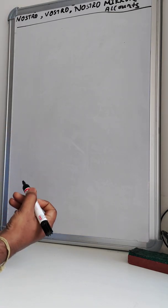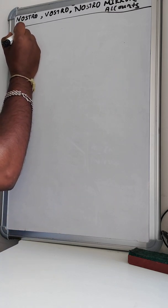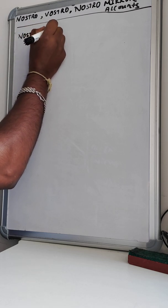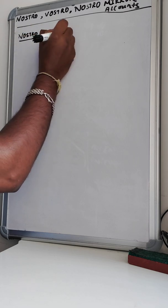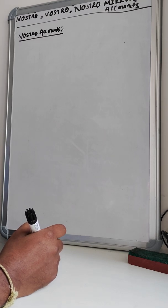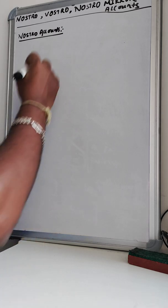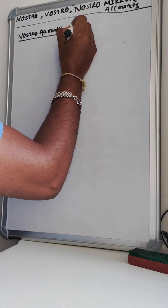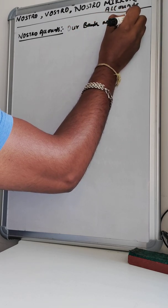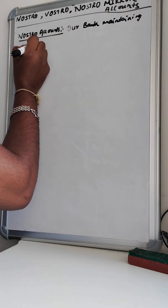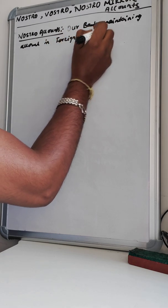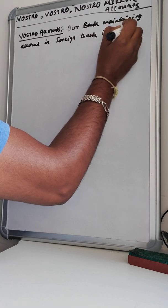Let's start with the basic definition of Nostro accounts, Vostro accounts, and Nostro Mirror accounts. The basic definition of the Nostro account is when our bank maintains an account in a foreign bank in a foreign currency, then it is called a Nostro account — our bank maintaining an account in a foreign bank in their currency.